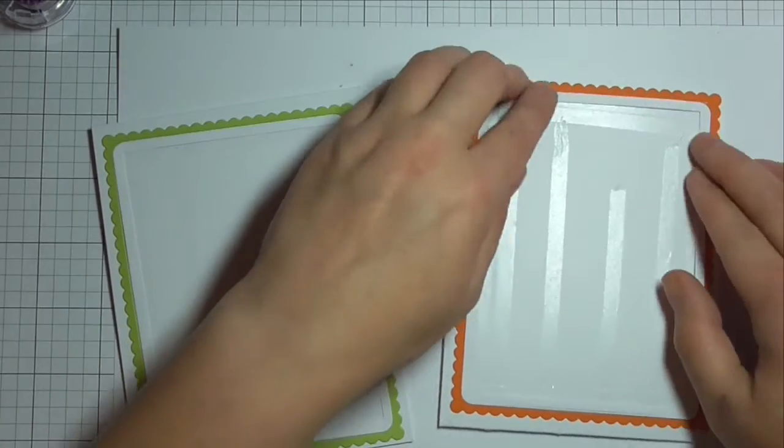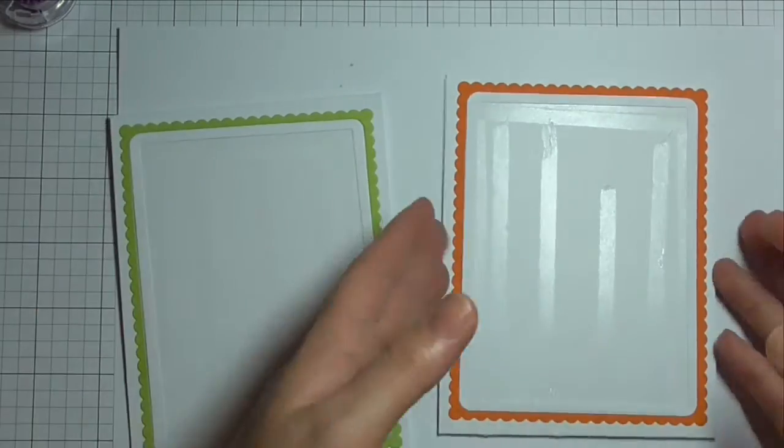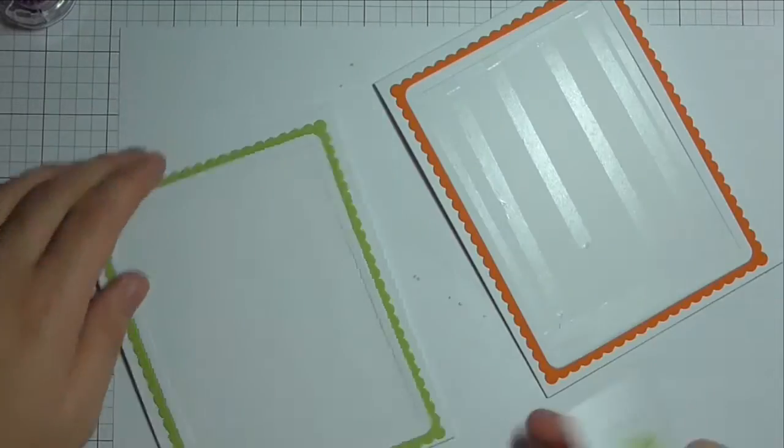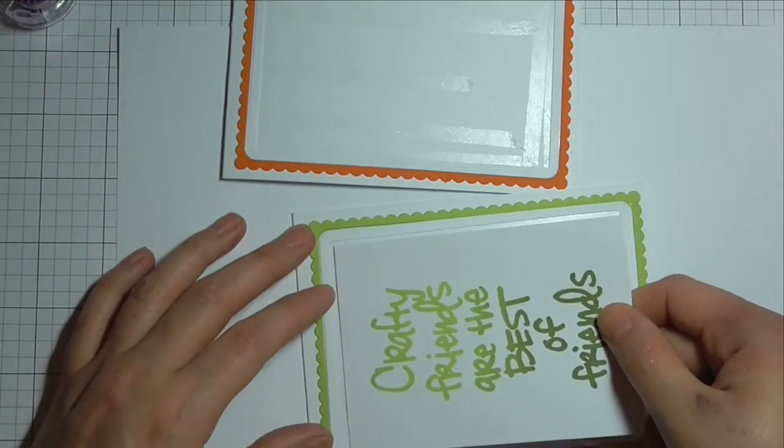So I'm just pressing down the curved frame that you end up with there. Making sure that both of my cards are the right way around. I did make that mistake on one of my cards.